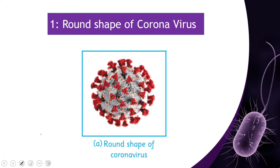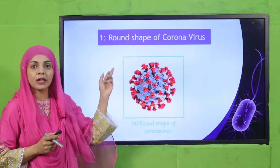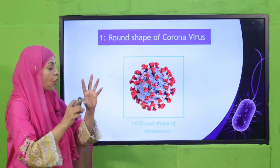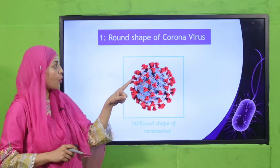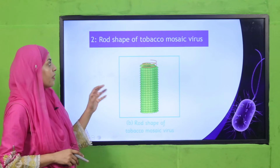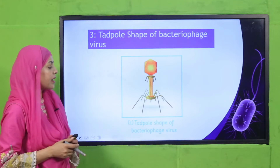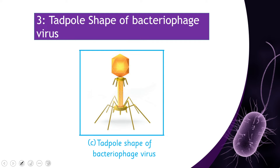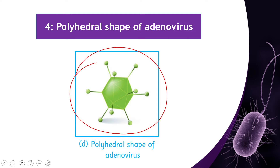Now let's quickly have a look at all the shapes. First look at the coronavirus — it has a spherical shape, a round shape like a sphere. Then comes the rod shape — this is a tobacco mosaic virus. This is a bacteriophage virus with a tadpole shape. Then comes the polyhedral virus — adenovirus is a polyhedral shape. So these are the different shapes of viruses found around you everywhere.